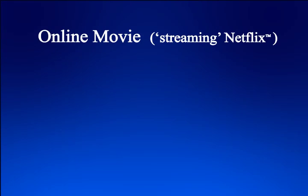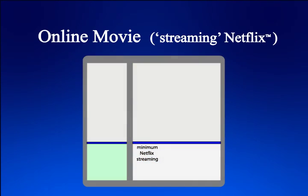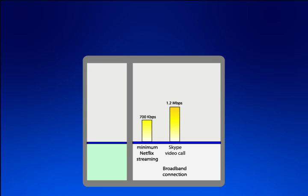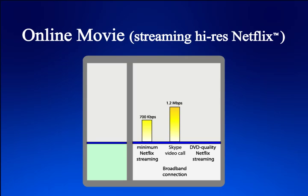If you watch a movie online from Netflix, for instance, you need a line of at least 700 kilobits per second. If you make a Skype video call on your computer, you need a connection of at least 1.2 megabits per second. And if you want a higher quality picture from Netflix, like what you get from a DVD, Netflix must send you data at a much higher rate — about 3.5 times the minimum Netflix speed. By comparison, a common dial-up connection is just 56 kilobits per second.